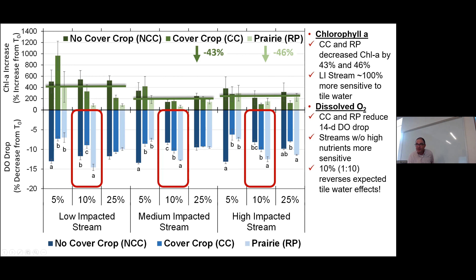We were surprised by that finding. Somebody noted: 'So you're telling me cover crops are just as good as prairie?' Well, maybe not from a nitrate loss perspective, but from a response in chlorophyll A in a stream — exactly. That's a good way to put it.